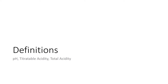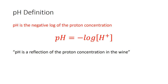Let's start with some definitions of pH, titratable acidity, and total acidity. Here's a standard textbook definition: pH is the negative log of the proton concentration. To make that more relevant, pH is a reflection of the proton concentration in the wine. The equation is: pH = −log[H⁺], the negative log of the concentration of protons.